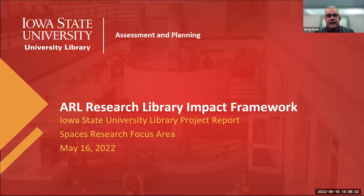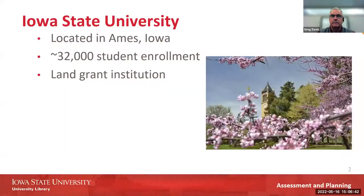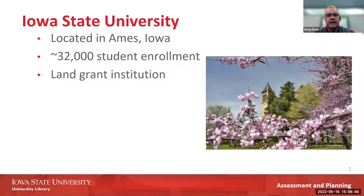Let's jump into this and wrap it up here with the Iowa State project. Just a quick thing about Iowa State: we're located in Ames, Iowa. We have around 32,000 students, give or take, and we are a land-grant institution here in the state of Iowa.